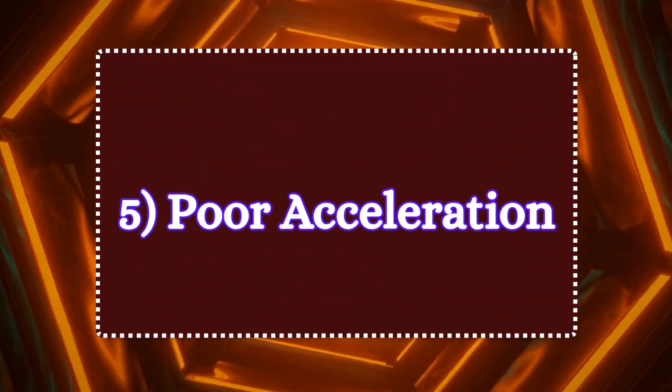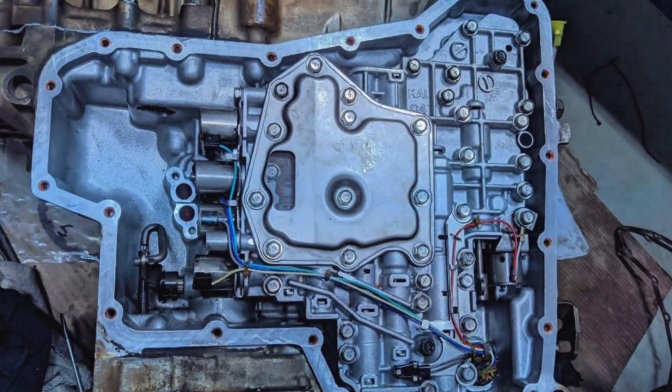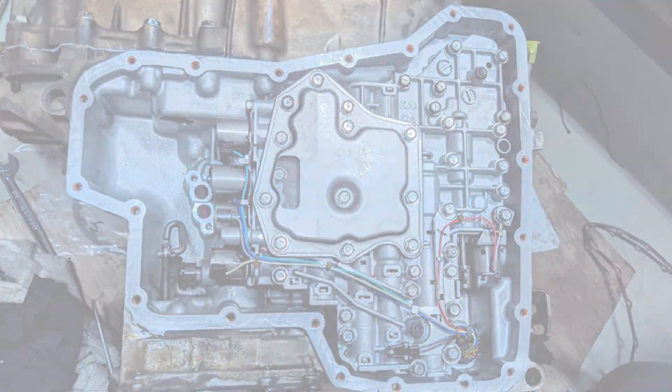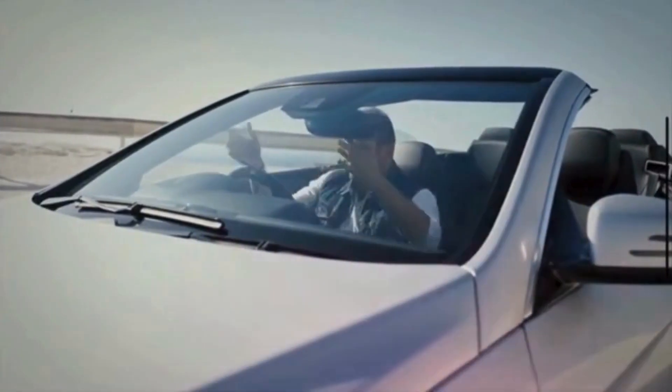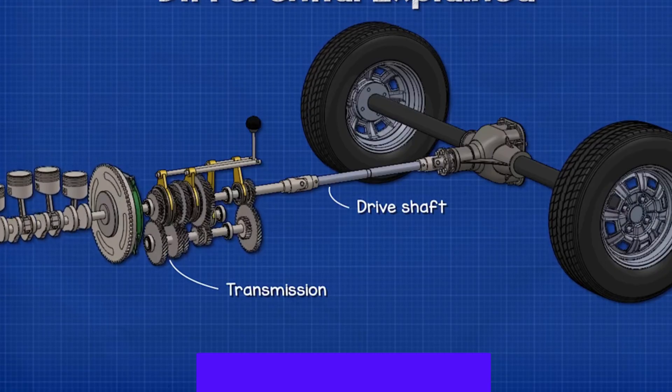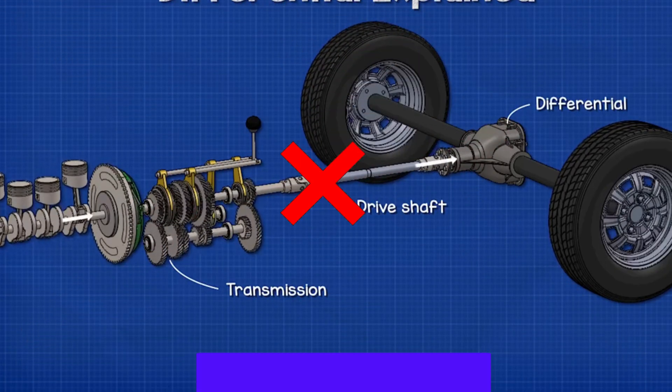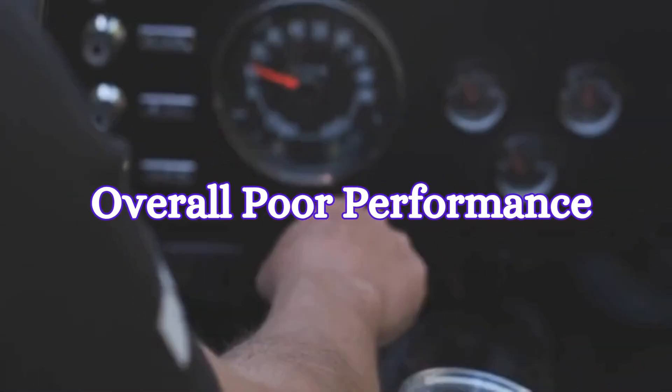Five, poor acceleration. A malfunctioning solenoid can disrupt the normal operation of the transmission, leading to inefficient gear changes. As a result, the engine might not transfer power effectively to the wheels, causing sluggish acceleration and overall poor performance.